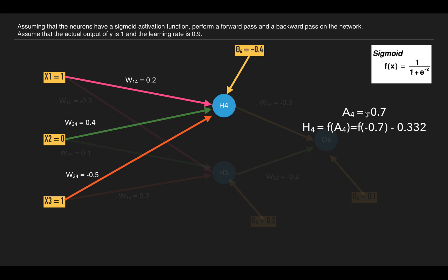Then we pass this value to the sigmoid function as we have given the sigmoid as the activation function for every node. So we get the value as 0.332.